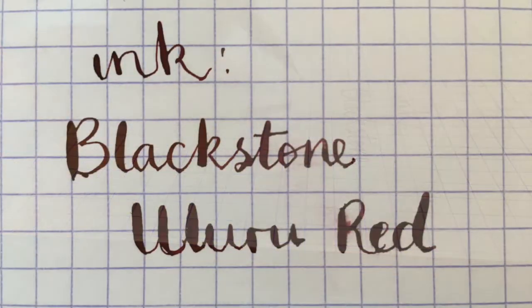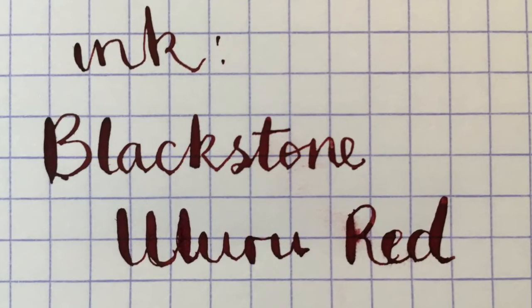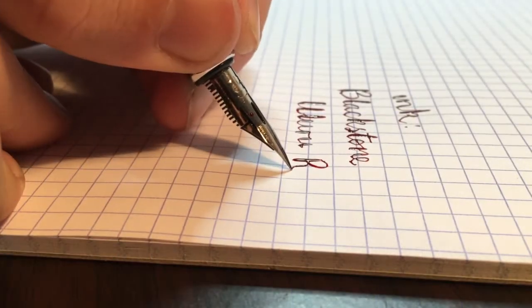Here I've filled the pen with Blackstone Inks Uluru Red from the Colours of Australia line, a really lovely rich red which looks great in a flex pen.